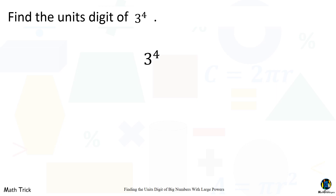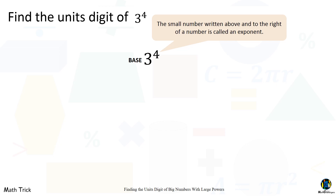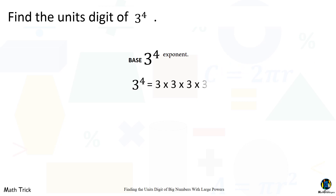Find the unit's digit of three raised to the fourth power. The number underneath the exponent is called the base, and the small number written above and to the right is called an exponent. An exponent tells us how many times we need to multiply the base by itself. Three raised to the fourth power means three times three times three times three, which equals 81. The unit's digit is one.